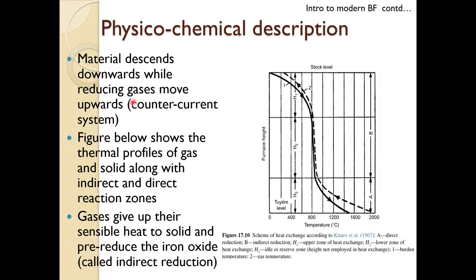In co-current flow, gas and solid travel in the same direction. In cross-current flow, one phase moves downward or upward while the other moves at 90 degrees. Most of the blast furnace operates in counter-current mode, except near the tuyere region where cross-current occurs because gas comes in from the side while liquid and solid flow downward.